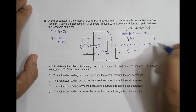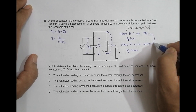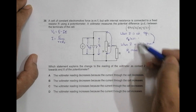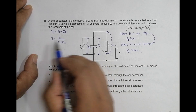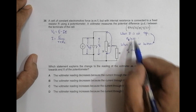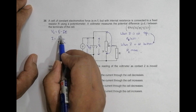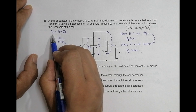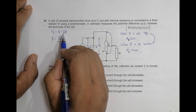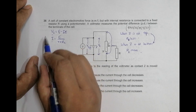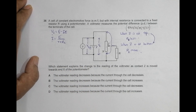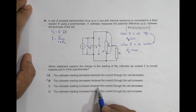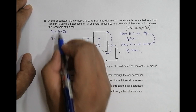Moving contact Z towards N/X means going from the top situation to the bottom situation, so R_outer increases. Since E and r are constant, when R_outer increases, i decreases. When i decreases, Vt = E - ir increases. So the voltmeter reading increases because the current through the cell decreases — that is correct.